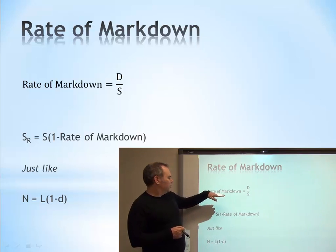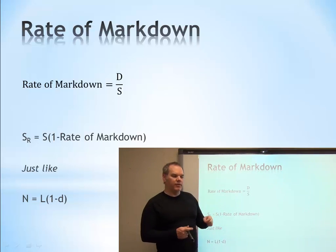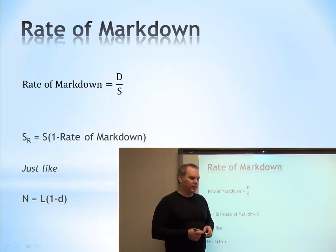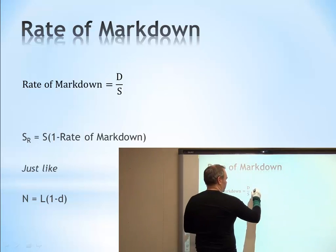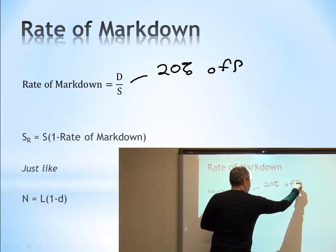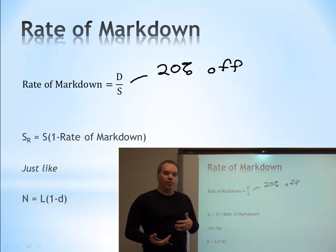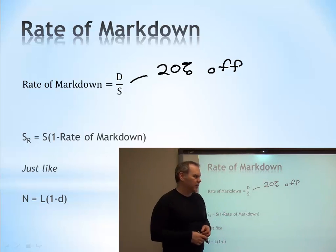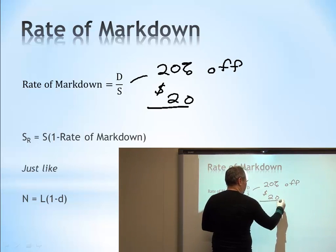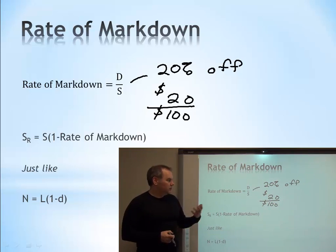The rate of markdown is the amount of the markdown compared to the regular selling price. For example, if we had a product with a regular selling price of $100 marked down by $20, that would be $20 over $100, which is 20% off.